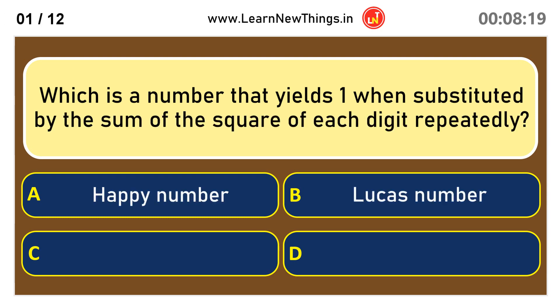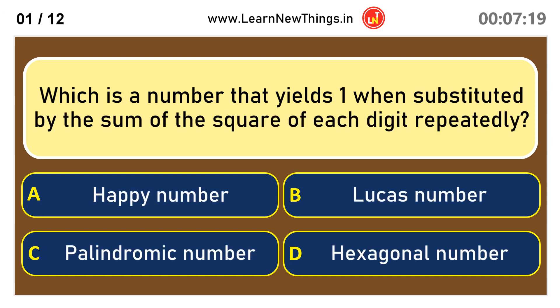Which is a number that yields one when substituted by the sum of the square of each digit repeatedly? Happy Number.